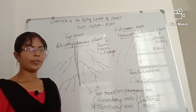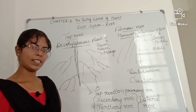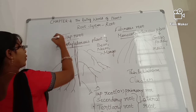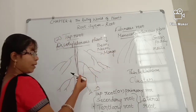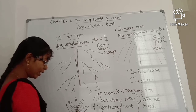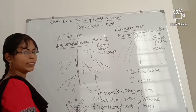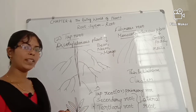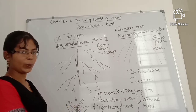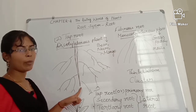Dicotyledonous plants — like the mango tree — have two seed leaves. If you have two leaves at germination, this type of tap root system will be found.